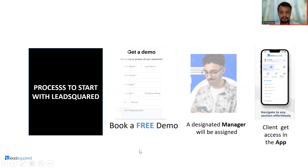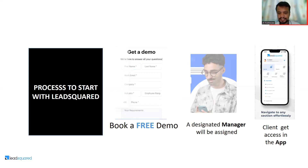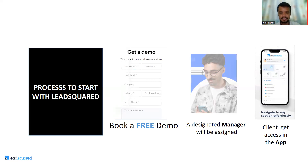The process to get started is divided into two parts: getting a demo and getting client access in the app. First, you book a free demo through their website. You can test the demo for a month, completely free. As soon as you book the demo, a designated manager is assigned for that month to help you understand the system and assist with onboarding.